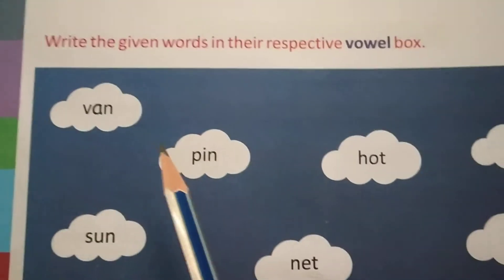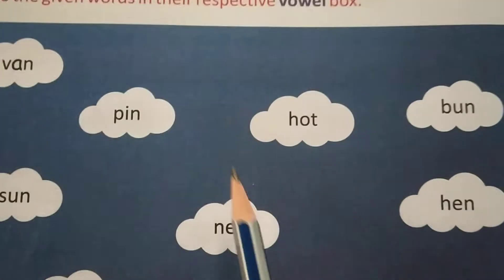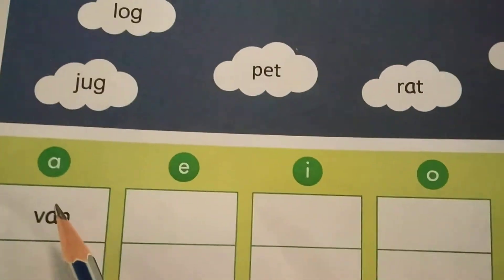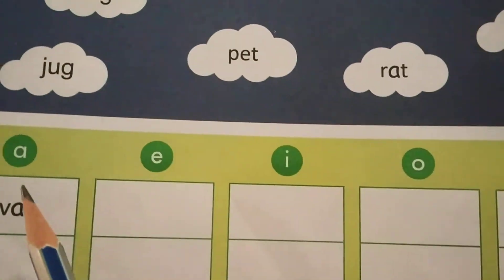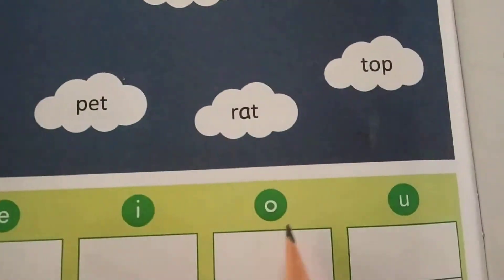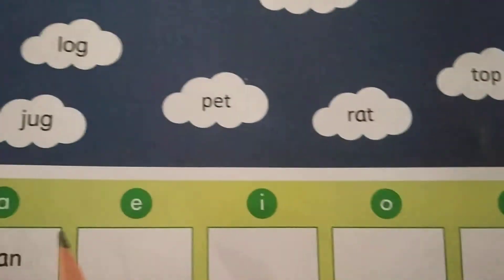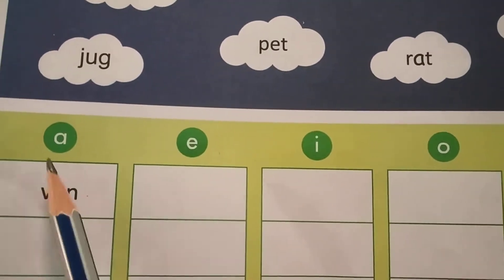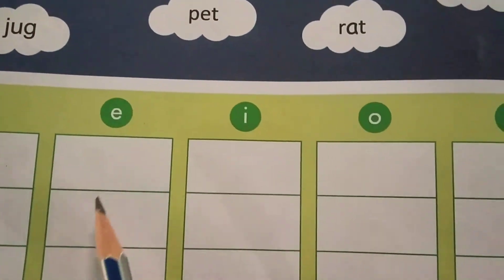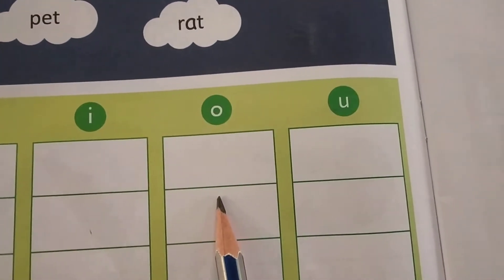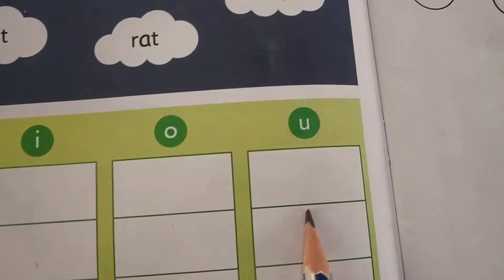Words are there, Nana? These are vowel words, so we should write in this vowel box. See: A, E, I, O, U — these are the vowels. So we should write A-vowel words here, E-vowel words here, I-vowel words here, and like that O and U.